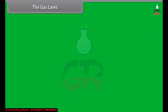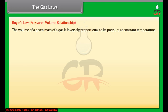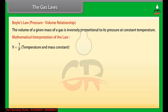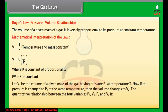The Gas Laws — Boyle's Law (Pressure-Volume Relationship): The volume of a given mass of a gas is inversely proportional to its pressure at constant temperature. Mathematically, volume is inversely proportional to pressure at constant temperature and mass: V = K × (1/P), where K is the constant of proportionality, so PV = K = constant. Let V₁ be the volume of a given mass of a gas having pressure P₁ at temperature T. If the pressure is changed to P₂ at the same temperature, the volume changes to V₂, giving the relationship P₁V₁ = P₂V₂ at constant temperature and mass.